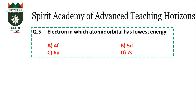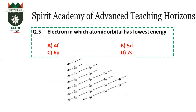Question number 5: Which has the lowest energy? According to the Aufbau principle, these are the subshell energy levels. The order is 4F, then 5D, then 6P, then 7S. So in this row, 4F has the lowest energy. The answer is A.